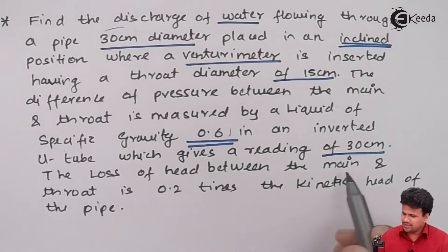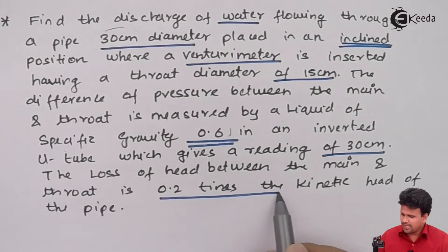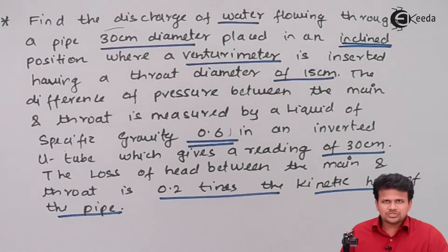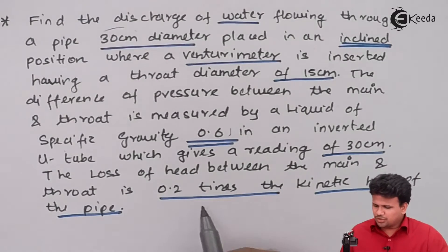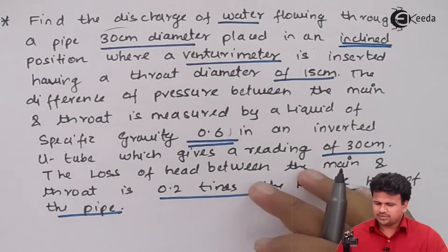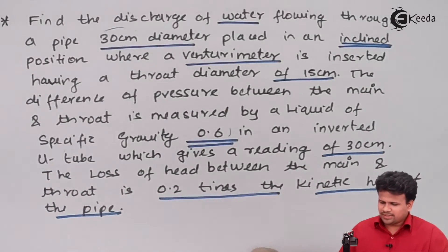The loss between the main and the throat is 0.2 times the kinetic energy head. We have to calculate the discharge. Let us see how we can calculate it, and let us write down the given data.